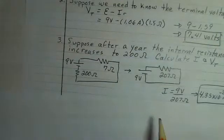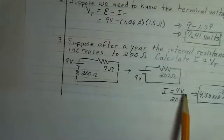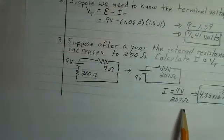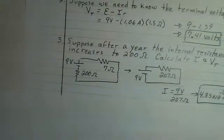V equals IR. Solving for I, we take the potential difference divided by the resistance. 9 divided by 207. 4.35 times 10 to the minus 2 amps, or 43.5 milliamps.